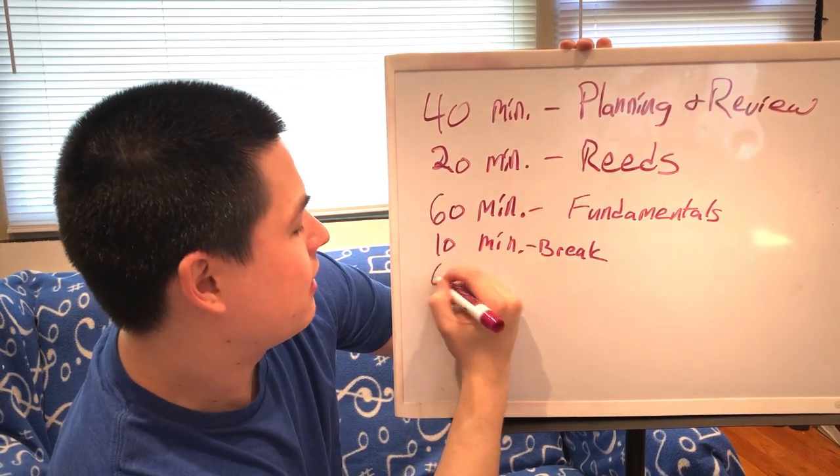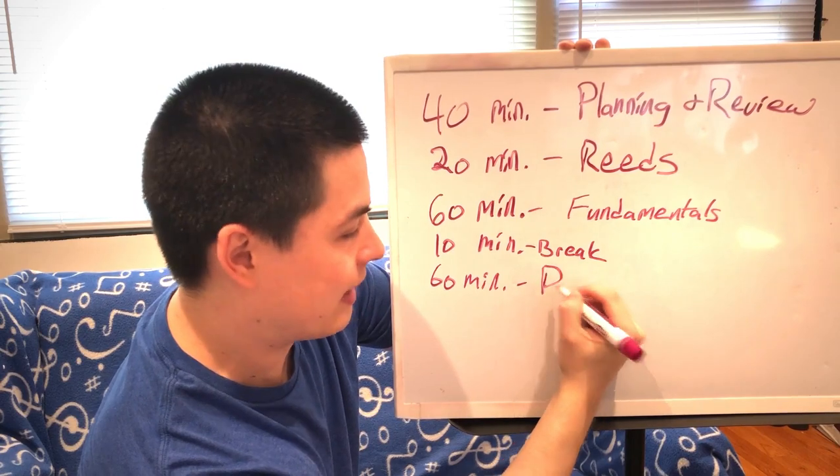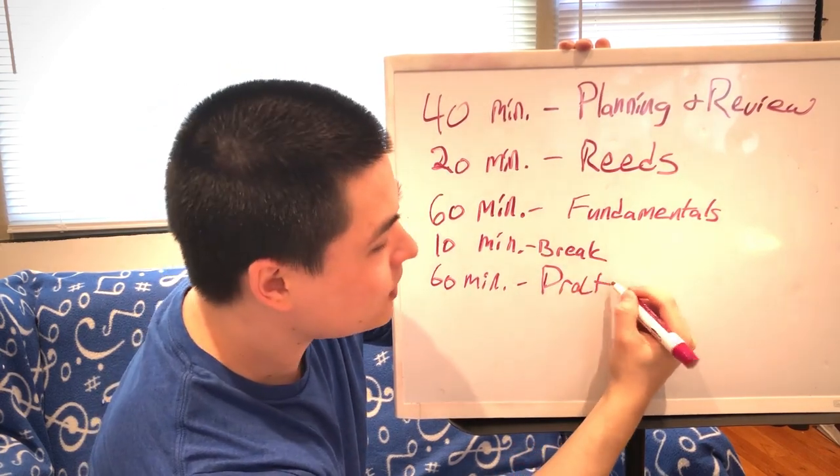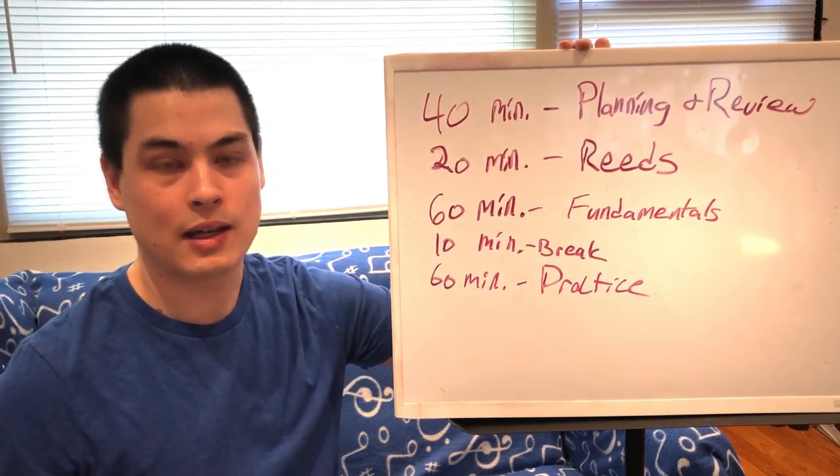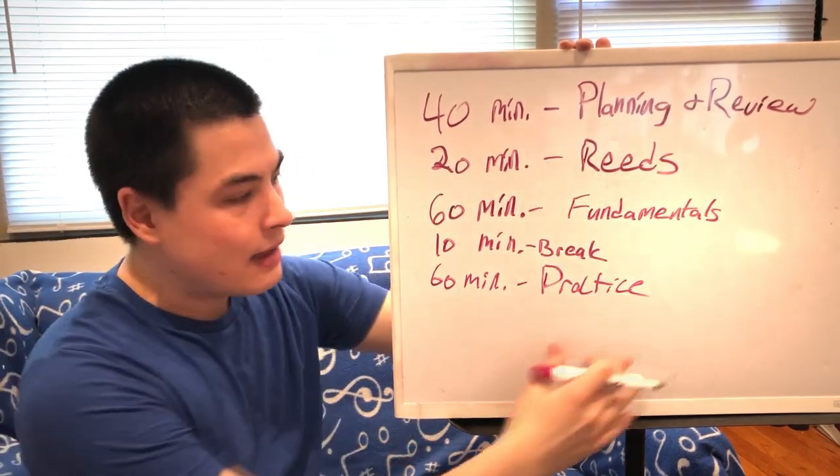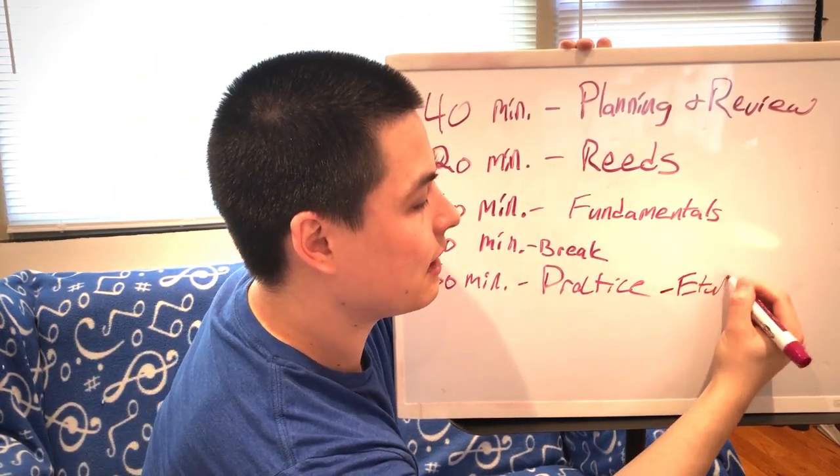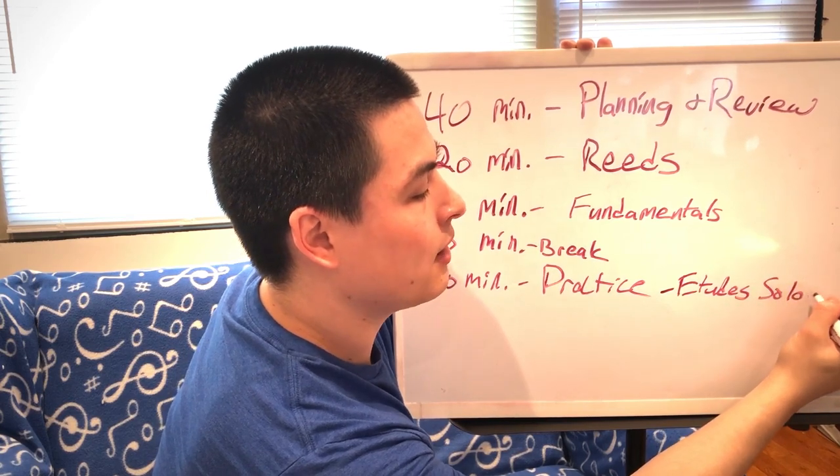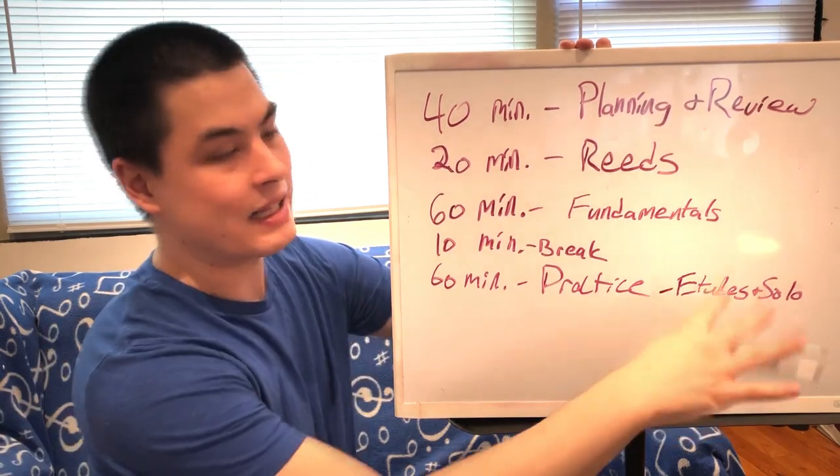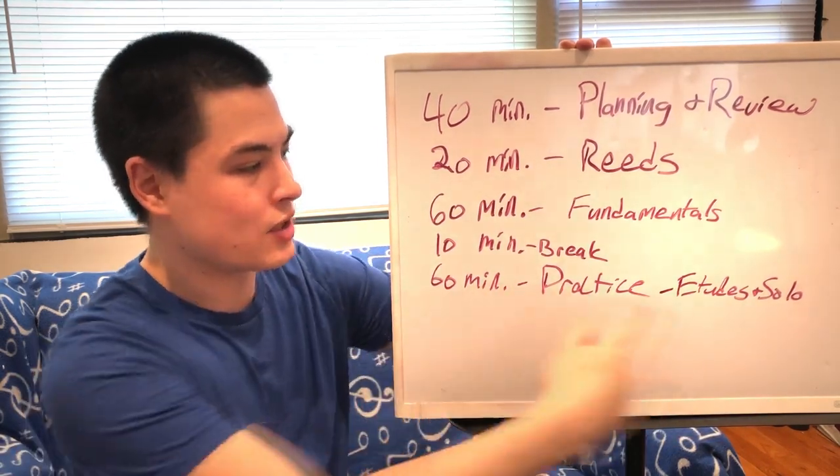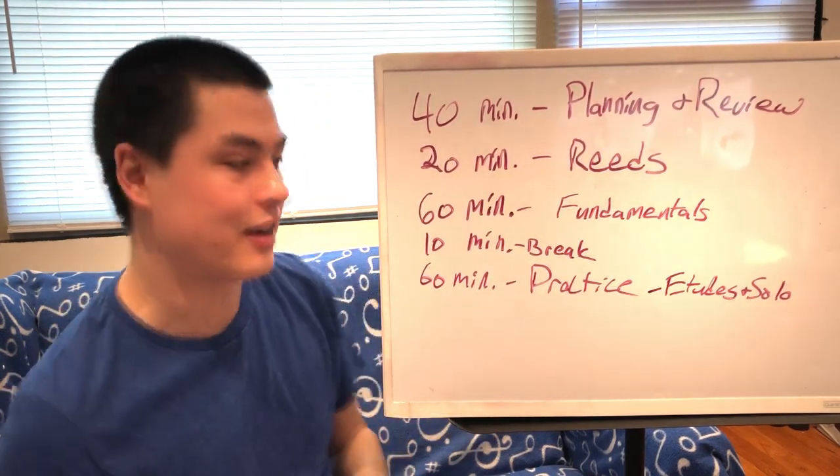Then after that, we have another 60 minute session. And this is where you just practice. This is whatever music you might be working on, solos, audition excerpts, ensemble music. I like to start this first practice with some etudes and solo music. The stuff that I'm playing for myself, for my own advancement, really clarinet-specific things. These are usually the hardest things that take the most concentration, so I like to do those earlier in the day.